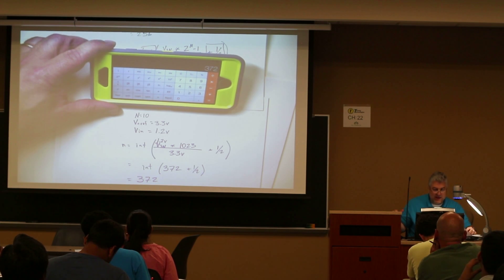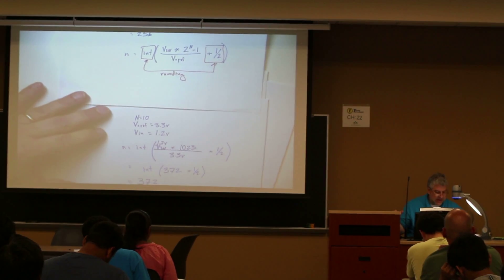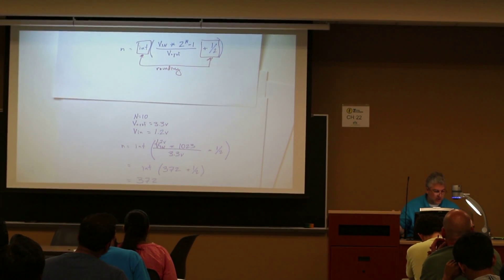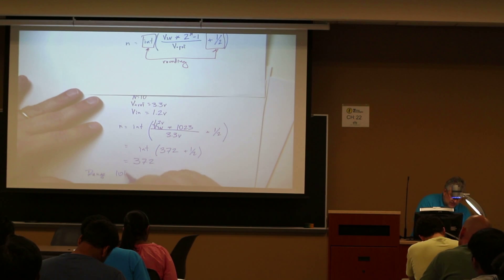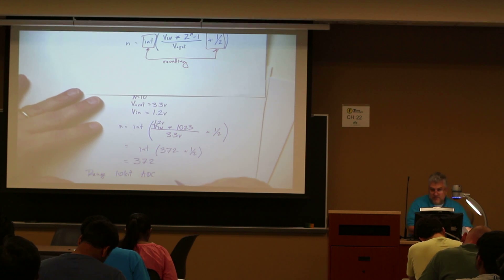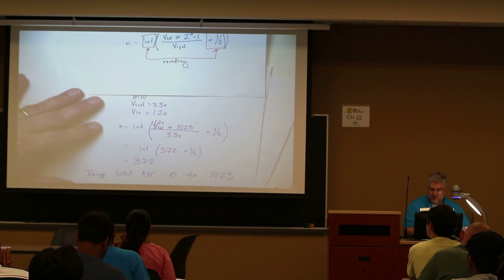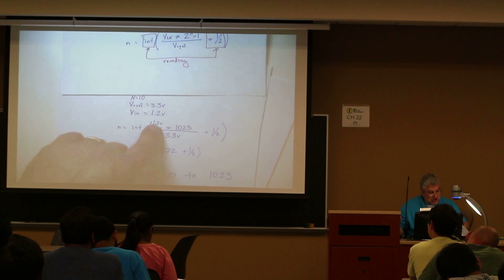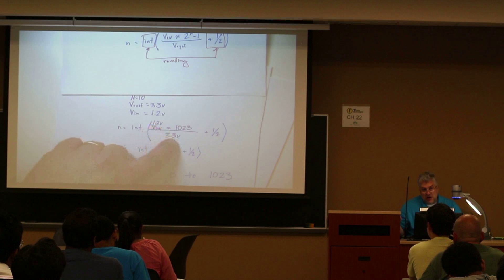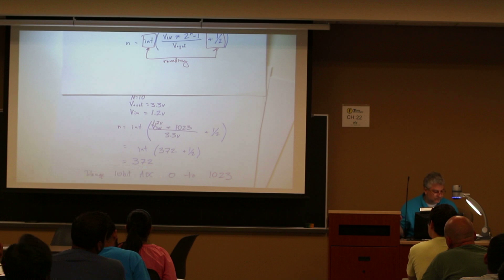Now remember, when I discussed this in class previously, I said just make sure that it's in the right range. I already know that my range is going to be 0 to 1,023. And 1.2 volts is going to be somewhat less than half — half would have been 512. So the number 372 looks to be about right.